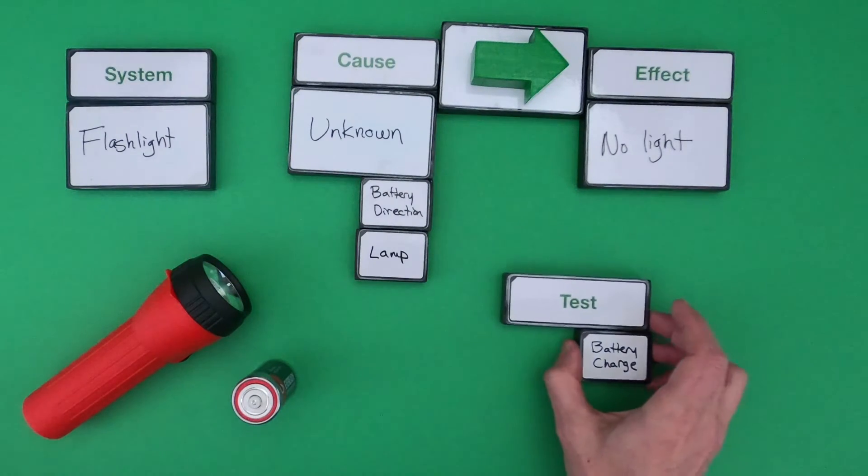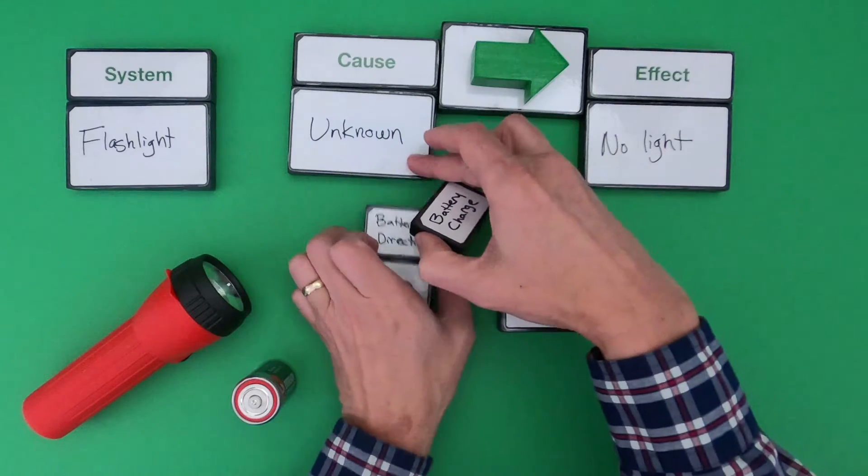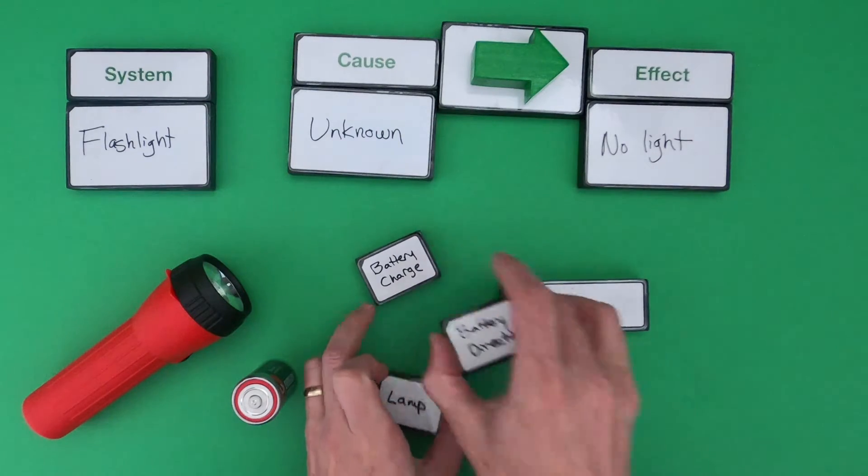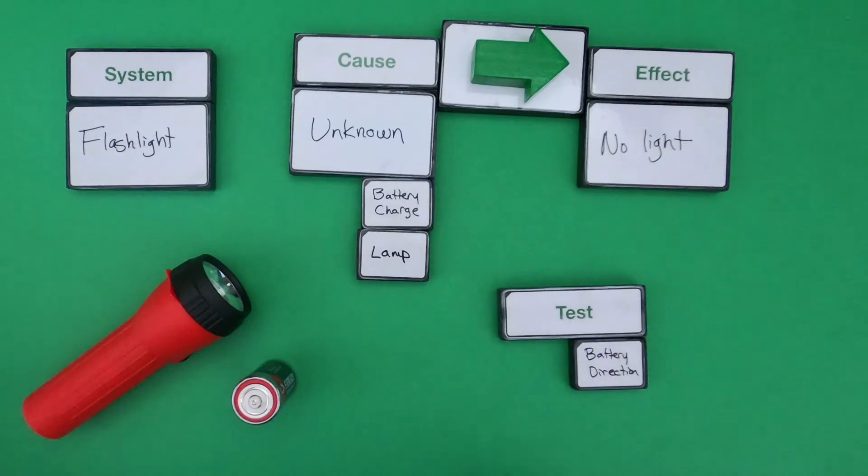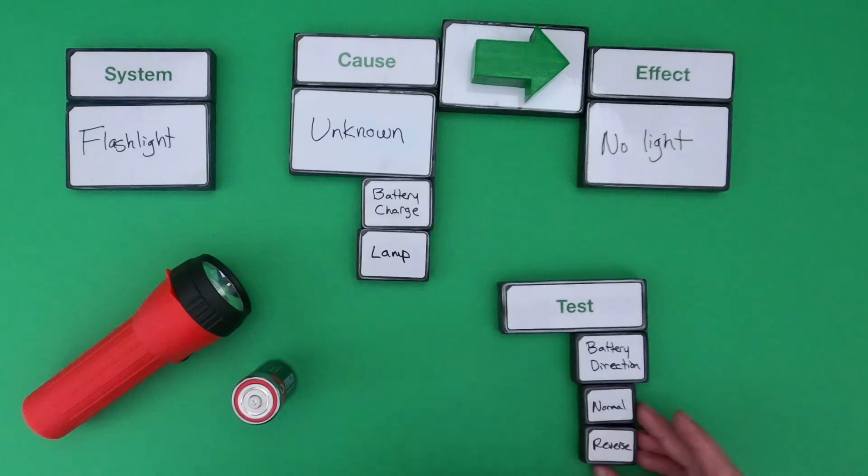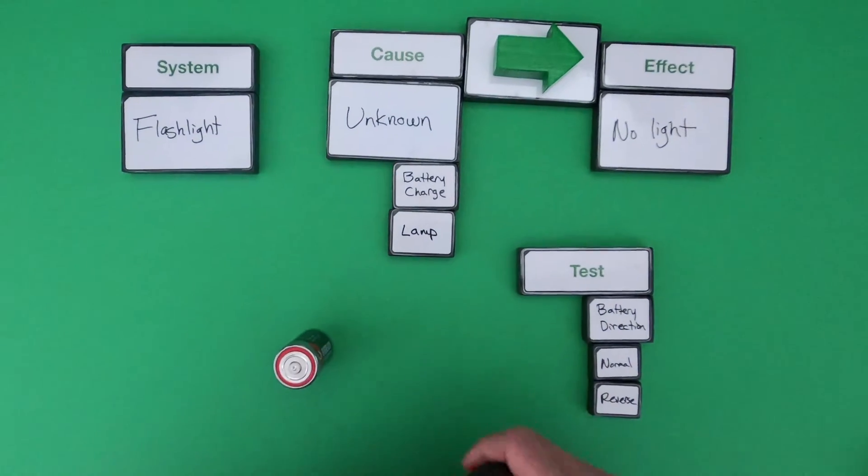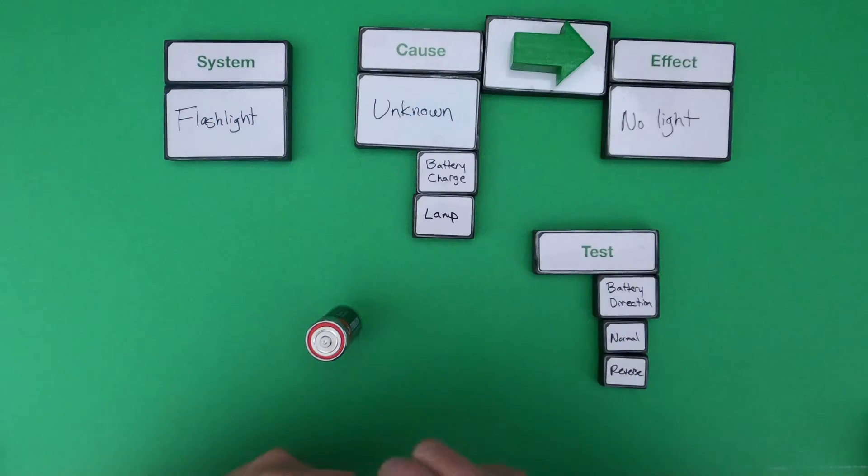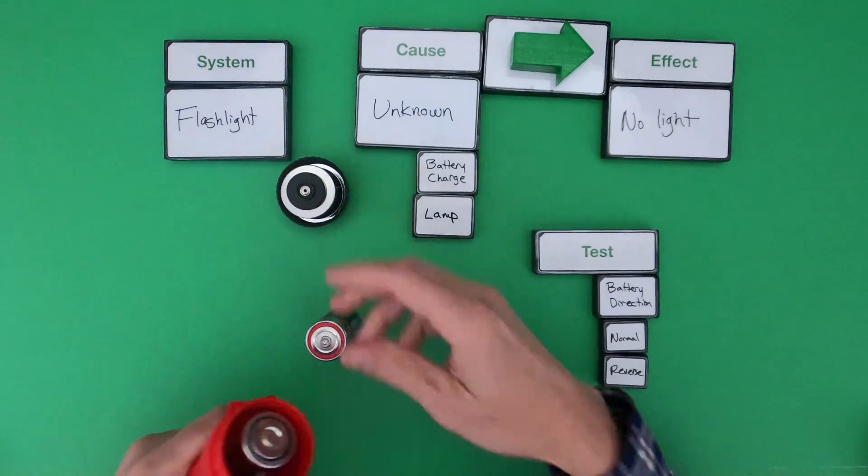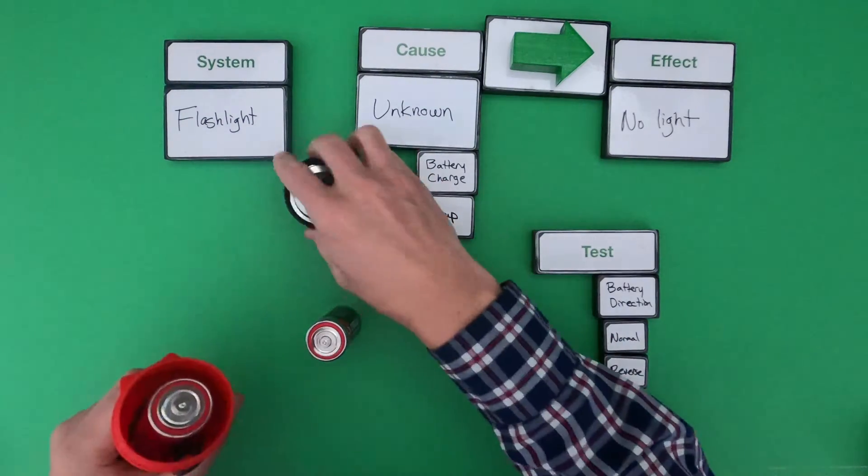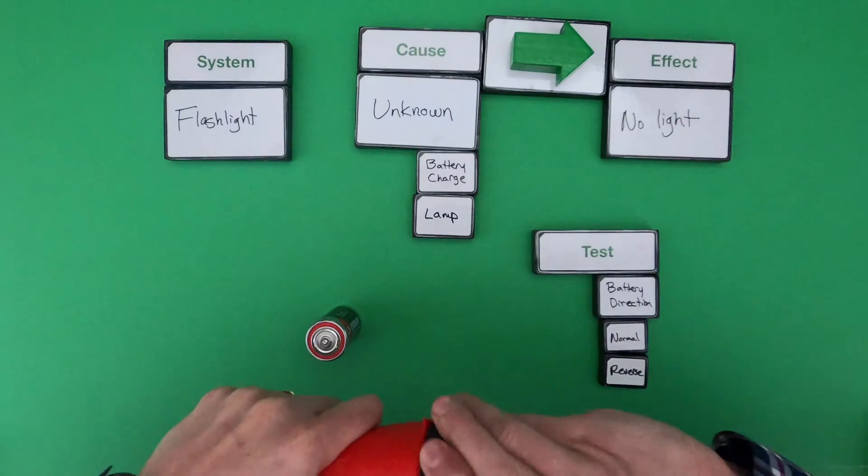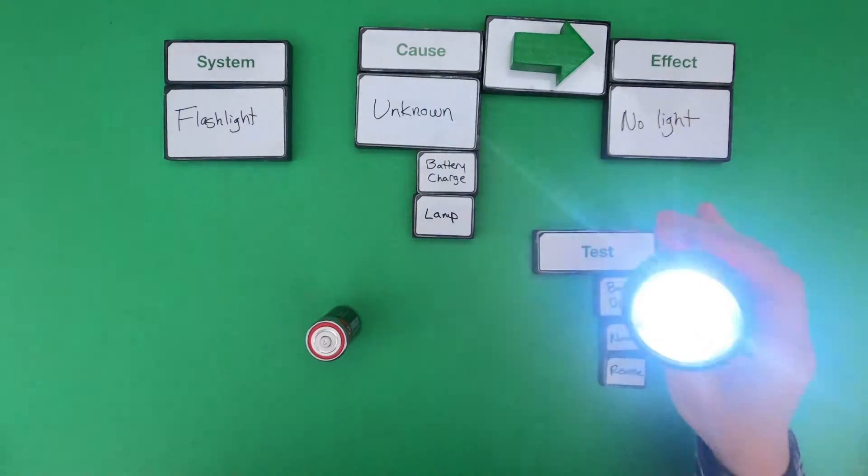Another thing we could do is we could look at maybe the battery direction. So we could look at a fair test where we test the battery direction, and it could be the normal direction or we could reverse the direction. And so what we're trying to do is not so much figure out what's wrong with the flashlight. You would eventually figure out that this battery is put in in the wrong way, and it's going to work if we go like that.